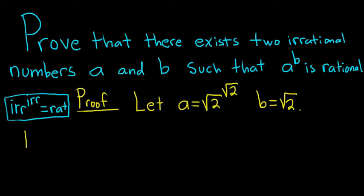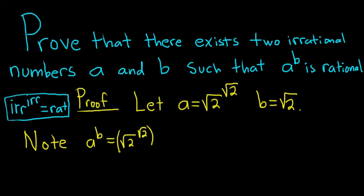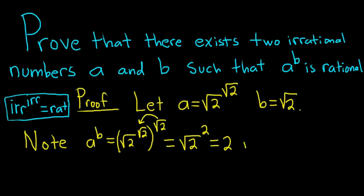Note the following observation. We're trying to look at a to the b. So a to the b equals the square root of 2 to the square root of 2, and that whole thing is being raised to b, which is also the square root of 2. What you do here is multiply the powers — the square root of 2 times the square root of 2 is 2. So this is the square root of 2 to the 2, and when you square the square root of 2 you just get 2. So this is clearly rational, because 2 is a rational number. So a to the b is rational in this case.